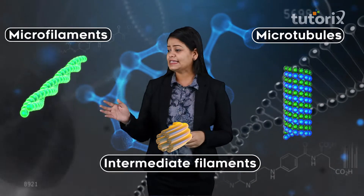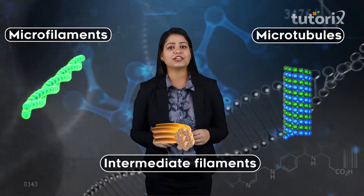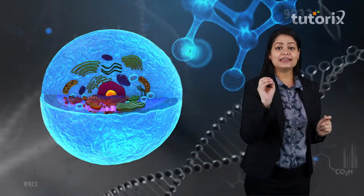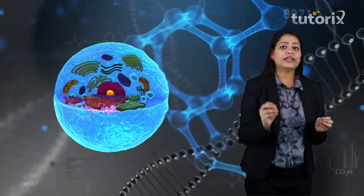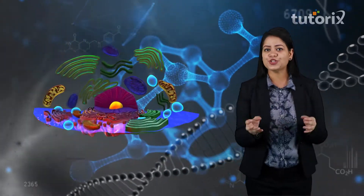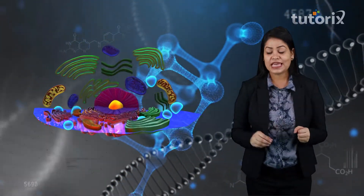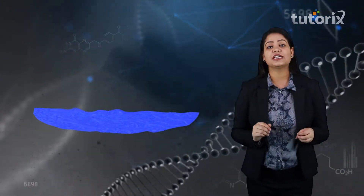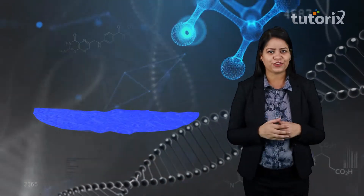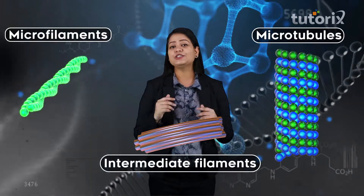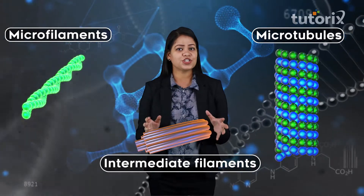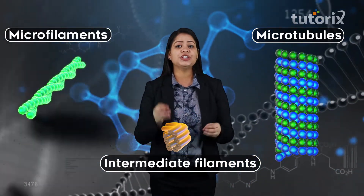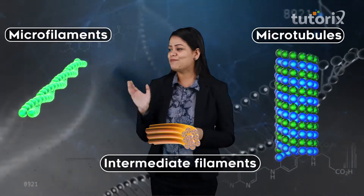These structures making up the cytoskeleton maintain the shape of the cell and its extensions. They regulate the orientation and distribution of cell organelles, and combinedly they facilitate intracellular transport and even the movement of cells. Now let us move forward and understand these structures in detail — in this session we are going to discuss microfilaments.